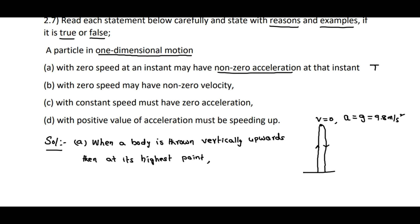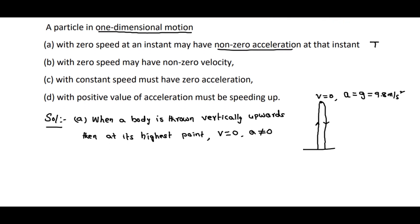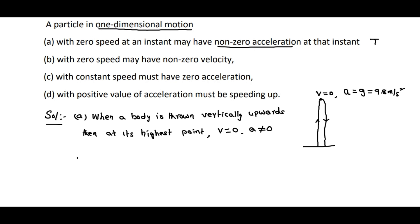So the answer is: when a body is thrown vertically upwards, at its highest point or maximum height, the body is momentarily at rest with zero speed, and acceleration is non-zero. Coming to the second part.